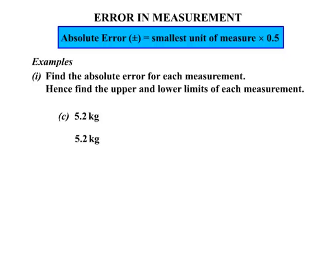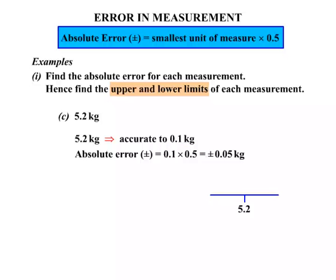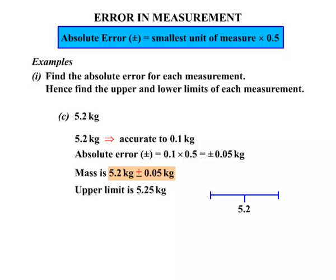Part C: 5.2 kilograms, which is accurate to one decimal place — in other words, accurate to 0.1 kilograms. The absolute error is 0.1 times 0.5, which equals plus or minus 0.05 kilograms. For the upper and lower limits: 5.2 plus 0.05 gives an upper limit of 5.25 kilograms; 5.2 minus 0.05 gives a lower limit of 5.15 kilograms. So a measure of 5.2 must lie between 5.15 and 5.25.